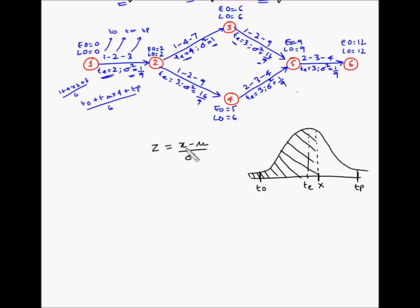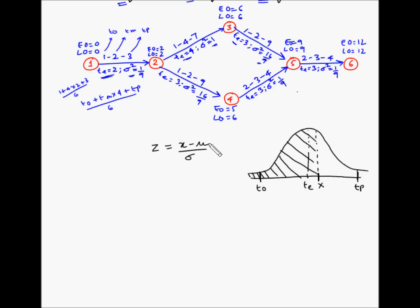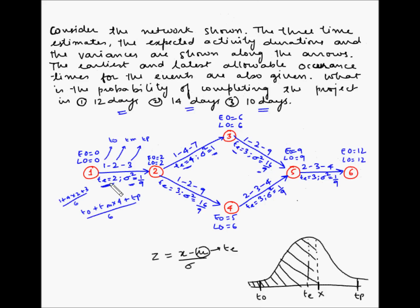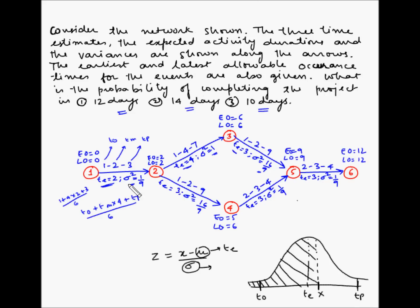We have been given the values of x: 12 days, 14 days, and 10 days. We do not have mu, which is the expected duration of the entire project — we only have expected durations of individual activities. We also do not have the standard deviation of the entire project — we only have the variances for each individual activity. As long as we can find the expected project duration and the project standard deviation, we can find the area proportions and thus the probabilities.